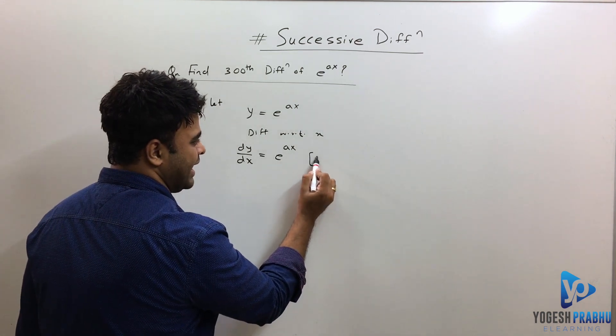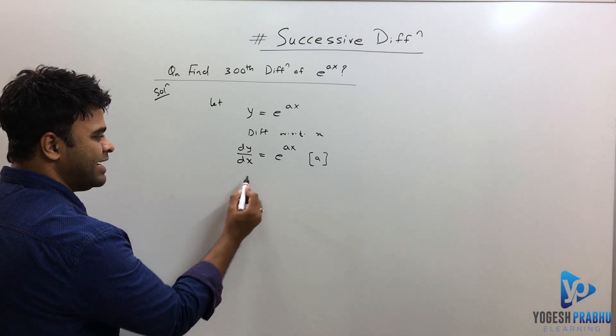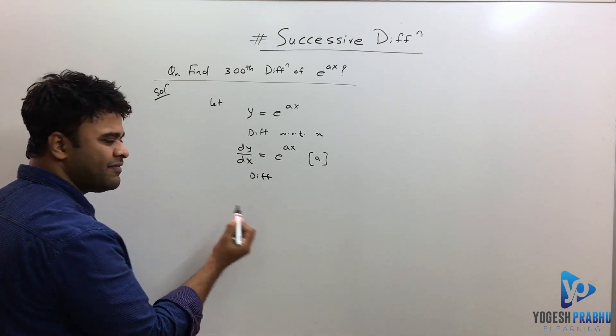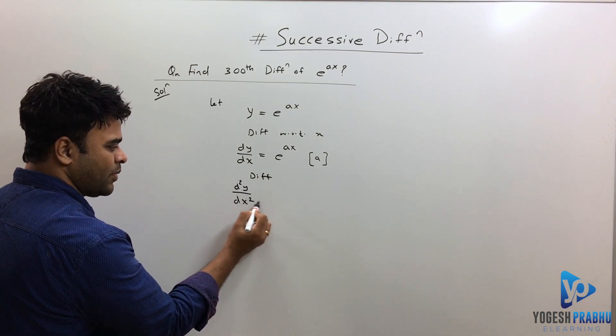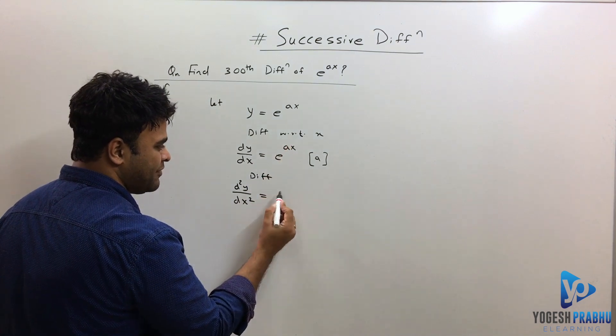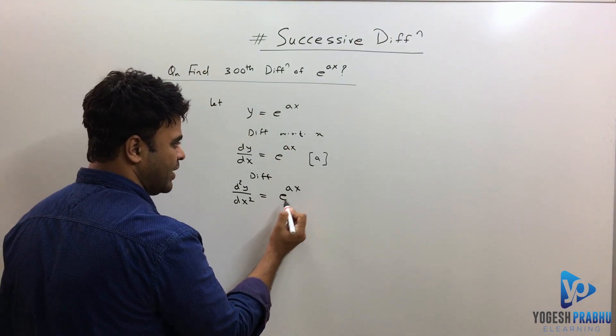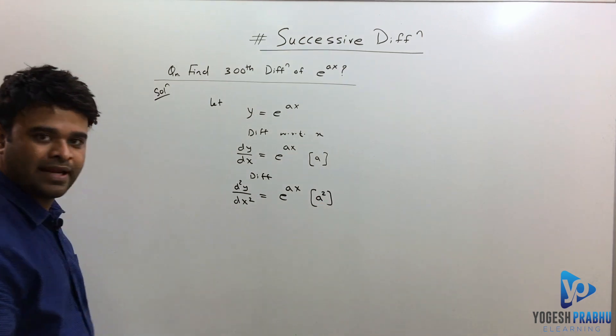Now if I differentiate again, we'll get the second derivative, that is d²y/dx². And the value: e raised to ax, a is already constant, so derivative of e raised to ax is just e raised to ax. And again the chain rule will give me a, and now this will become a².